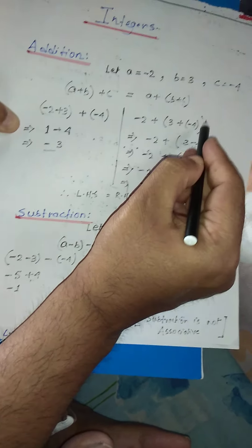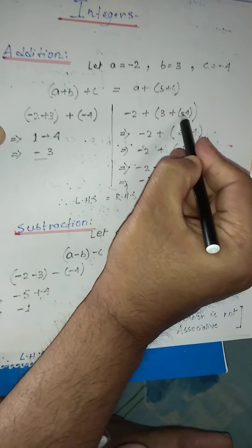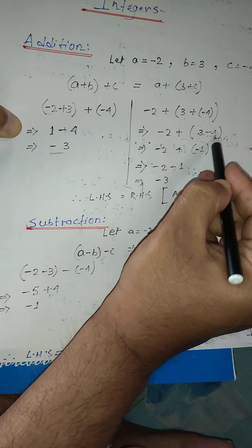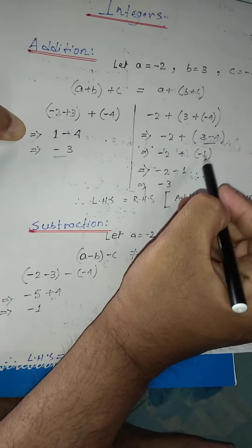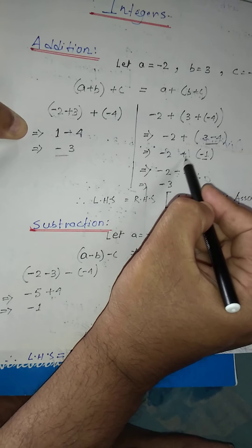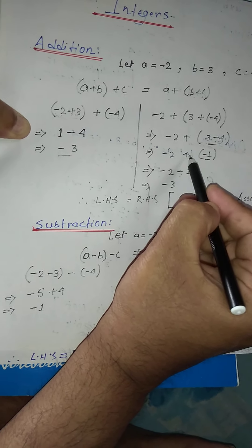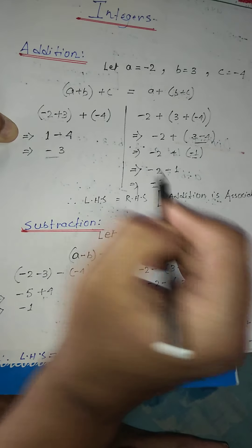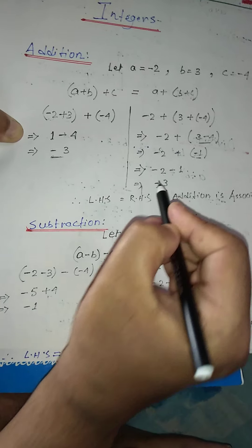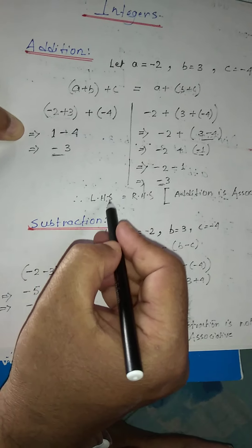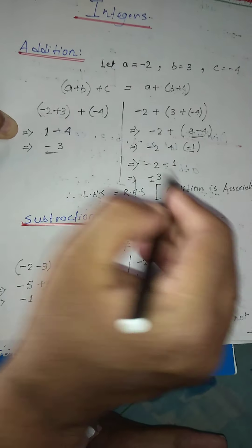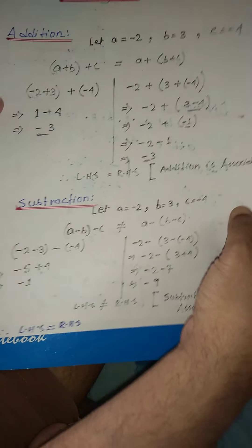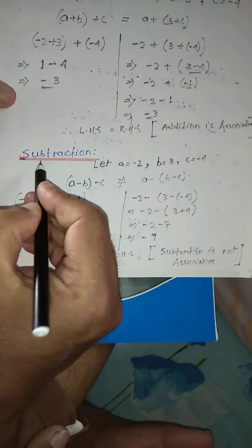Now let's solve the bracket first. Plus minus is minus, so minus 2 plus (3 minus 4). We solve the bracket: 3 minus 4 is minus 1. Then we open the bracket: plus minus is minus, so minus 2 minus 1 is minus 3. Carefully observe — both sides are getting the same answer. So we write LHS equals RHS: addition is associative for integers.